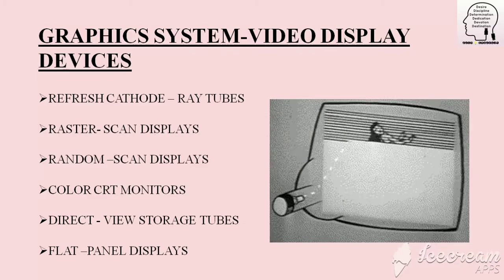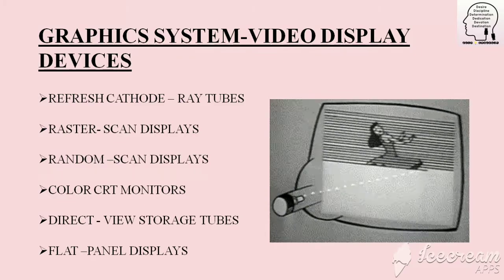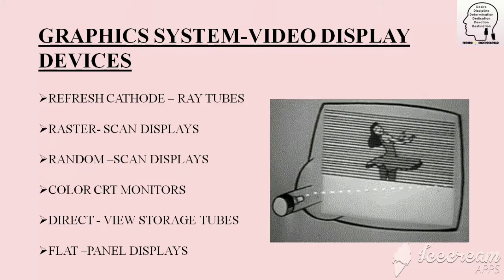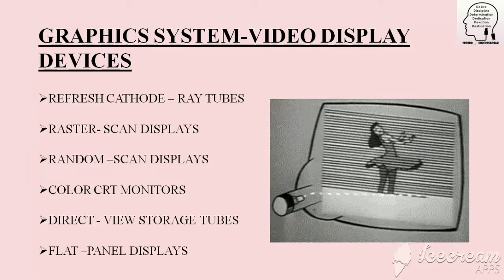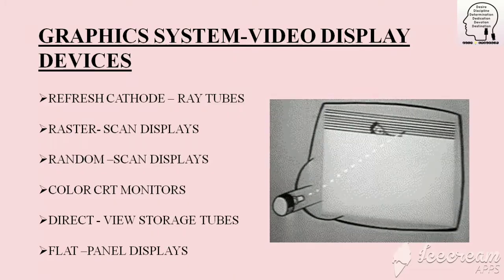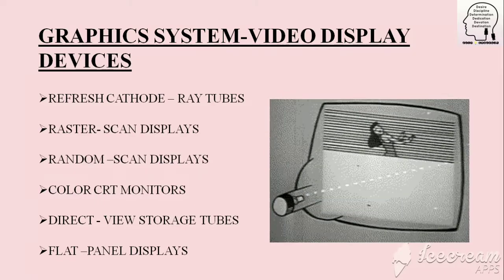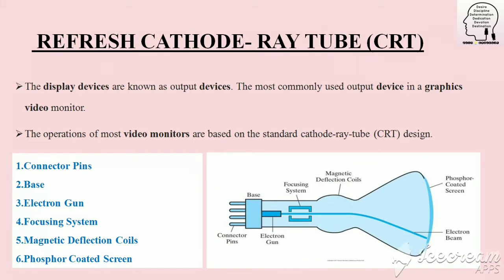First, video display devices. We know about the topic of video or image or something that we can display when we are doing a lot of devices. That's why we have video display devices. There are many types and variations: cathode ray, raster scan, random scan, flat panel, direct view. There are many types of cathode ray tubes. Most video display devices are output devices. We can display an image or video on the monitor — that's obviously output devices.